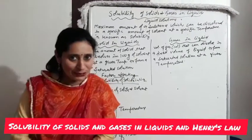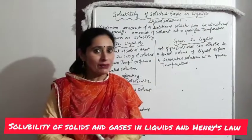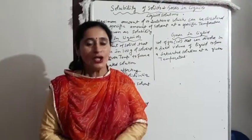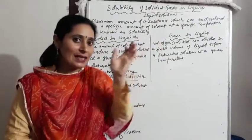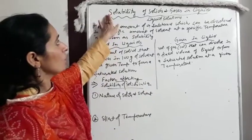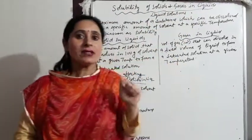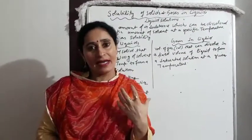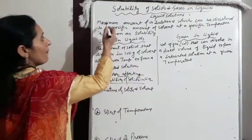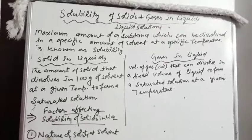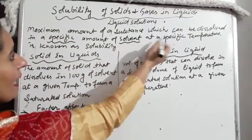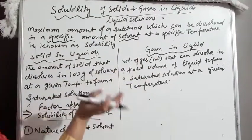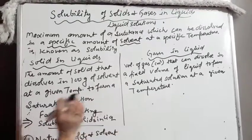Students, welcome to your chemistry classroom, my YouTube channel Learn Cheme. Continuing from the previous topic on types of solutions, today we'll discuss solubility. We'll deal with the liquid solvent concept — specifically, solubility of solids and gases in liquids. Solubility is the maximum amount of a substance which can be dissolved in a specific amount of solvent at a specific temperature.